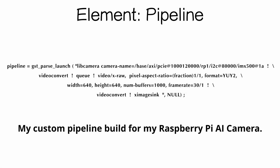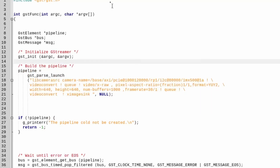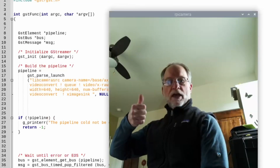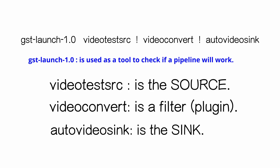This is my custom pipeline build using the gst_parse_launch() method — it's pretty long. I'm going to use parse_launch and demonstrate how it works. This is a pre-built pipeline description I got off the GStreamer website, and for demo purposes I'm going to run it.